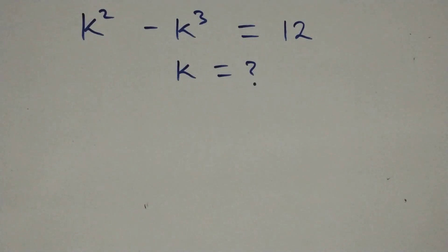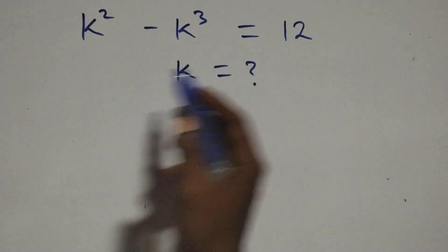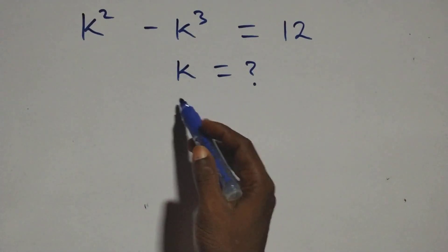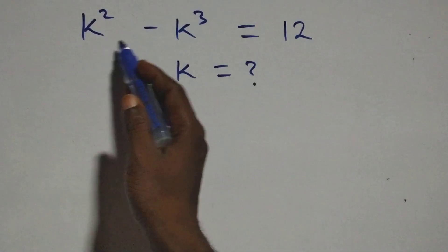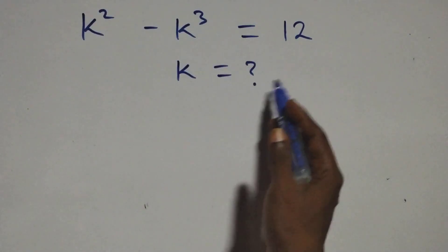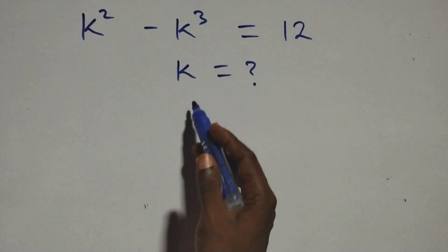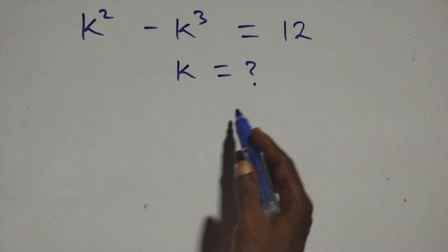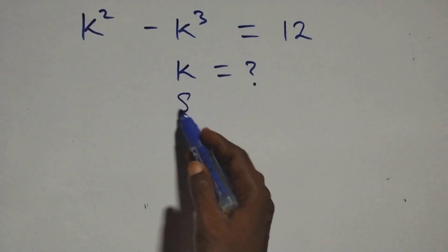Hello, you are welcome. How to solve this nice algebra equation: k squared minus k cubed equals 12. Find the value of k here.